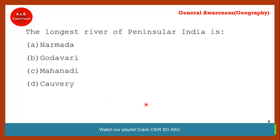Coming to the next question: the longest river of Peninsular India — you can think of South India. Yes, you are right — it is option B, Godavari. Godavari is the correct answer.